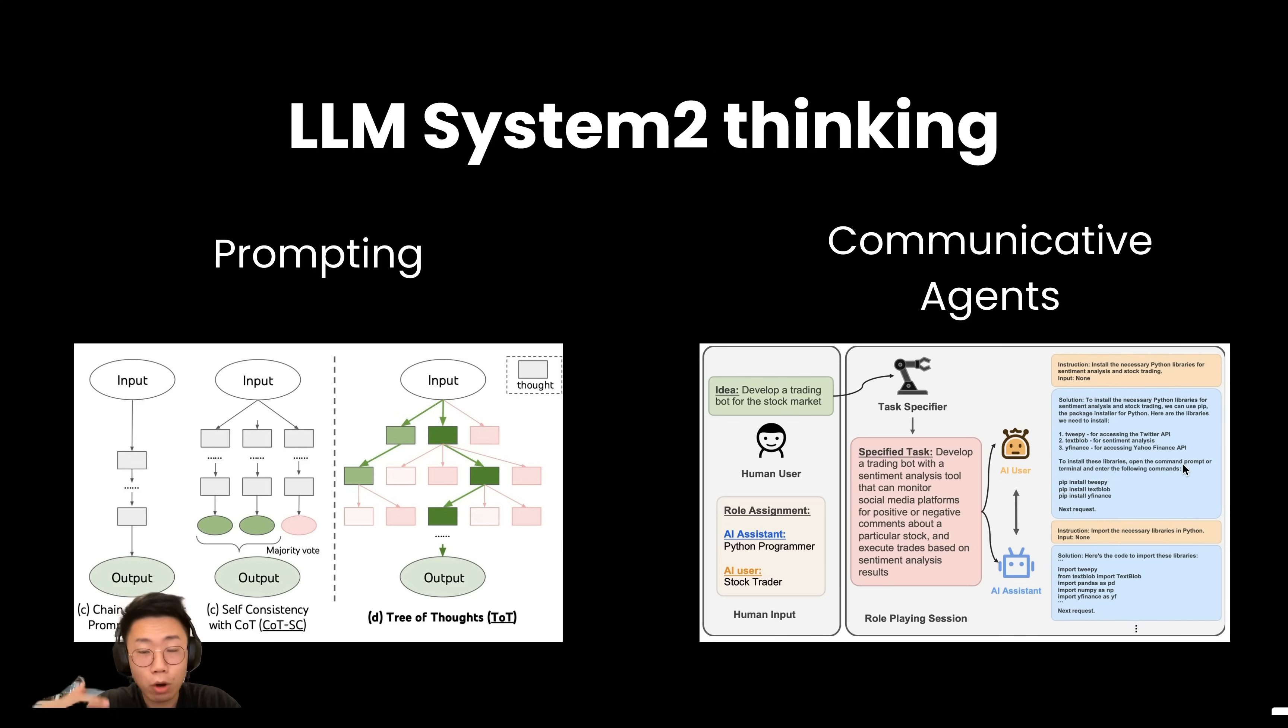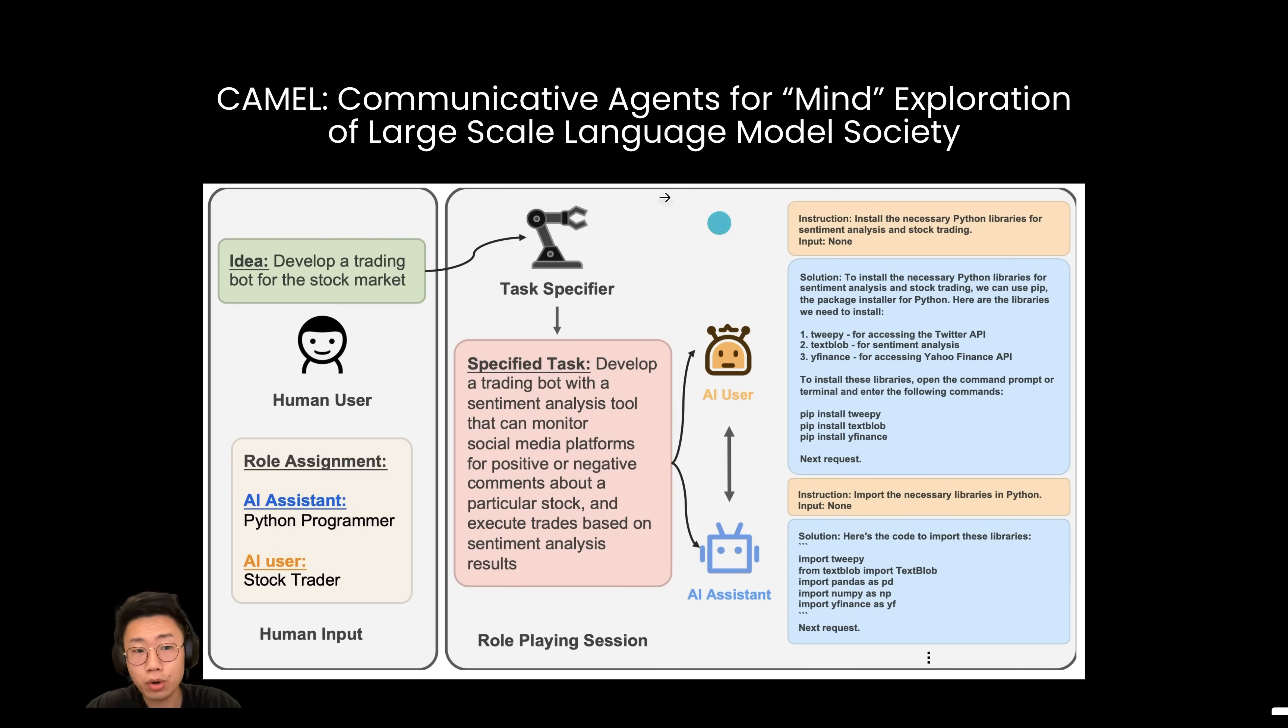Communicative agents are basically a multi-agent setup where users can easily define two different agents and simulate a conversation between them so that they can reflect and spot the flaw in each other's perspective and thinking process. It was initially introduced by a project called CAMEL, Communicative Agents for Mind Exploration of Large Scale Language Model Society, where they showcase some complex examples that a large language model can complete tasks like develop a trading bot for the stock market by simulating a conversation between two agents, Python programmer and stock trader.